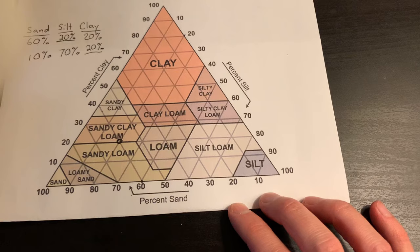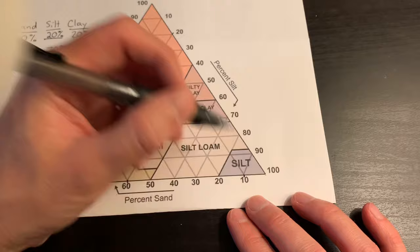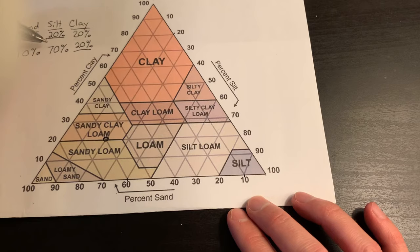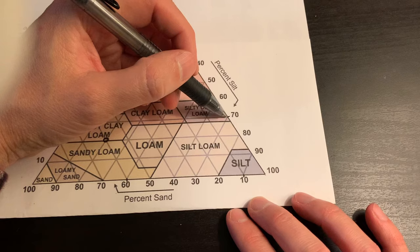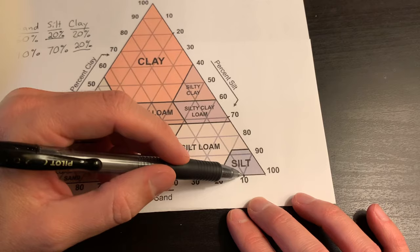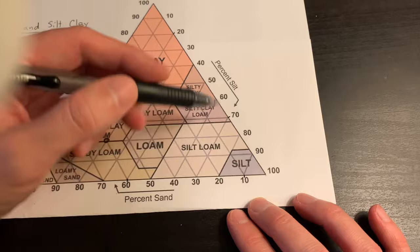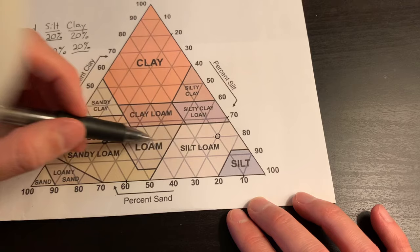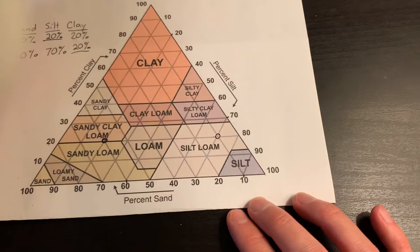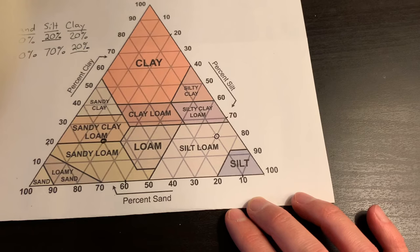So we take our sand and we look at our 10 percent, and so we're going to be coming up on this line. We take our silt and we find 70 percent, and we're going to be coming down on this line. So if we have sand and silt, we double check that with our clay percentage - it all adds up to 100. So for this soil, we are a silt loam.